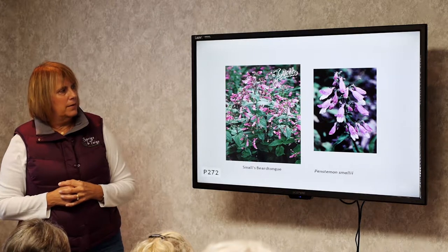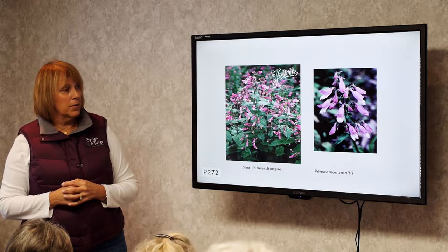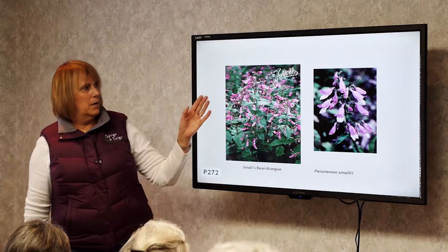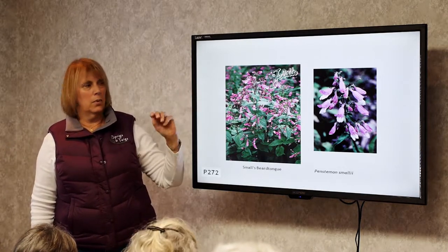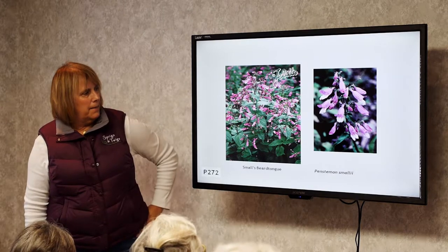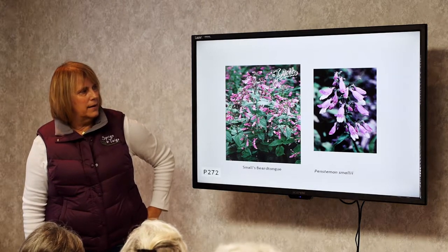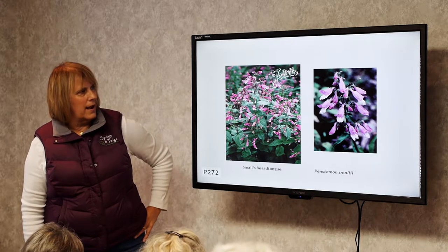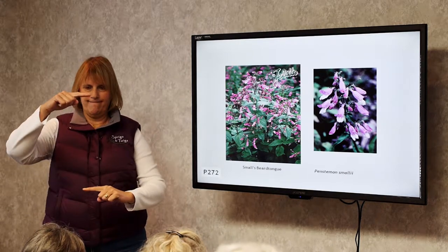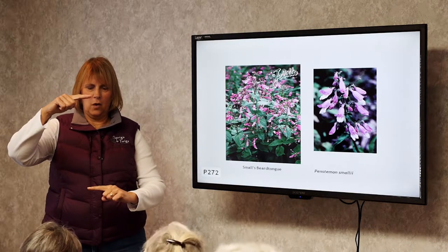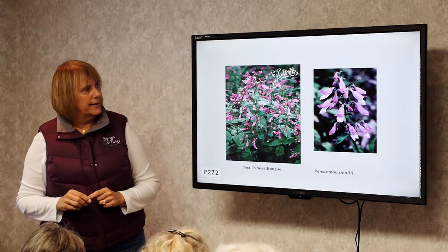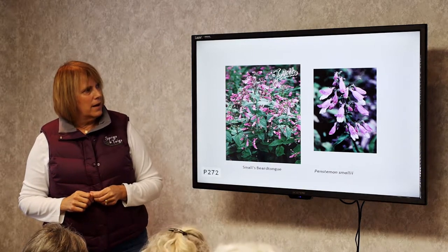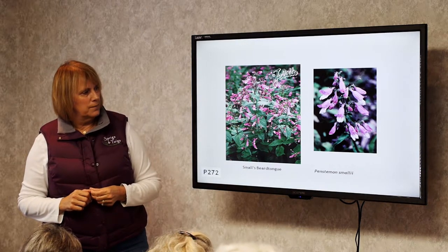Beardtongue, Penstemon. This is a great hummingbird plant — any of the penstemons are. They come in pink, red, purple, and white flowers. Bees and hummingbirds both like this plant. This is a shorter one, maybe that tall when full grown with flowers, and it's usually full of flowers. It blooms in June.